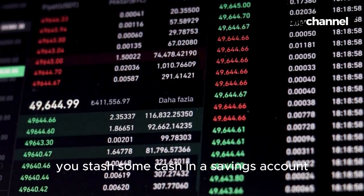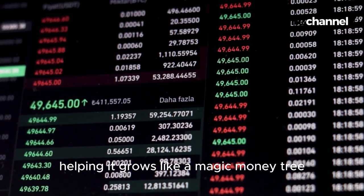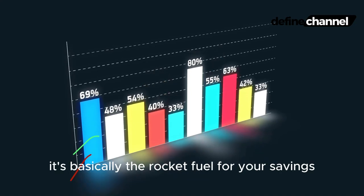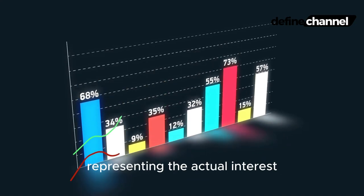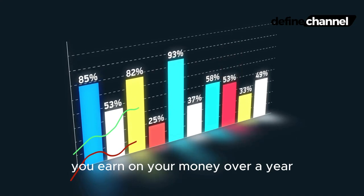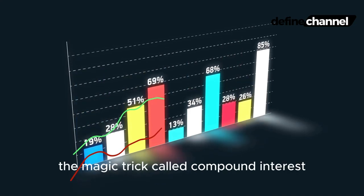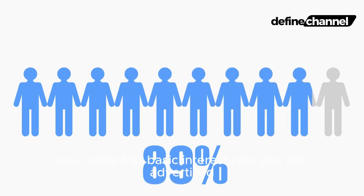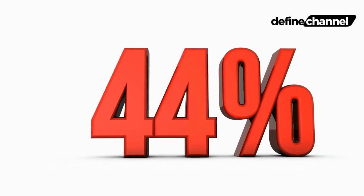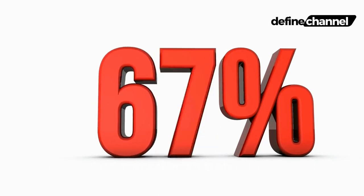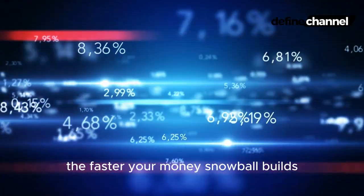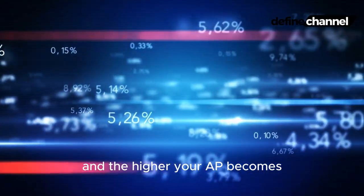Imagine you stash some cash in a savings account, helping it grow like a magic money tree. Well, APY is the key to unlocking that growth potential. It's basically the rocket fuel for your savings, representing the actual interest you earn on your money over a year, taking into account compound interest. Unlike basic interest rates you see advertised, APY factors in how often the interest is applied — whether it's daily, monthly, or quarterly.